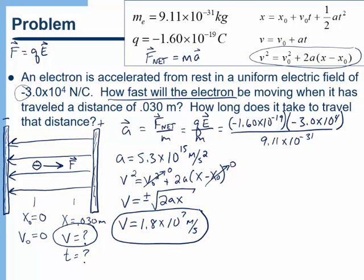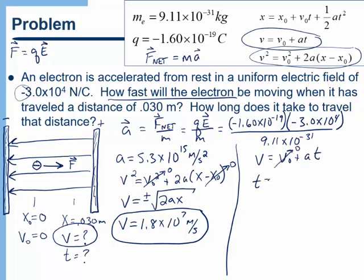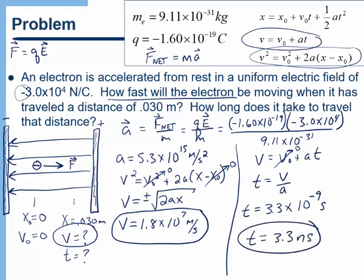Once I have the final velocity, I use v = v₀ + at with v₀ = 0, so t = v/a. That gives 3.3 × 10⁻⁹ seconds, or 3.3 nanoseconds. So again, you'll notice that an electron moving in an electric field is very similar to the types of problems we did with one-dimensional kinematics in the first semester.